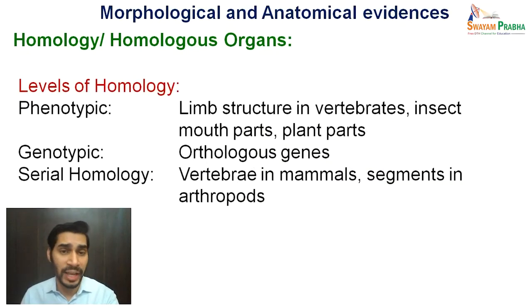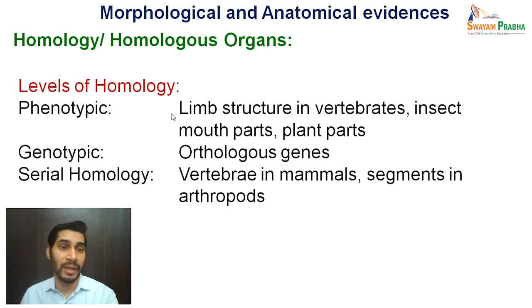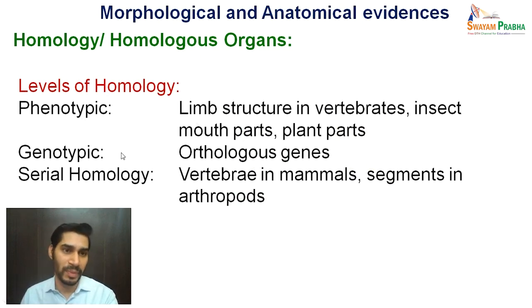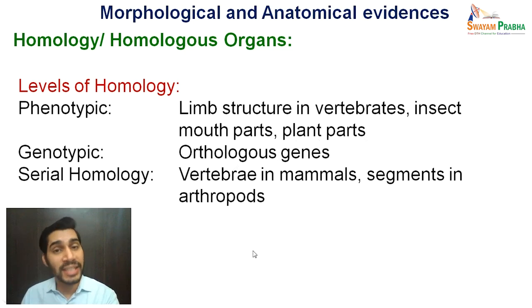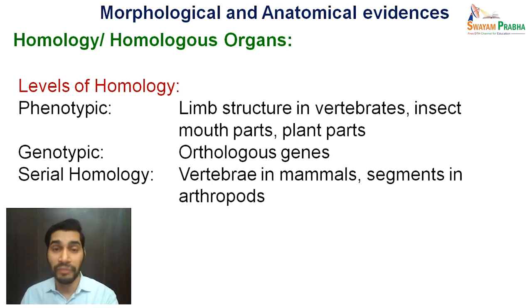The level of homology discussed through limb structures, insect mouthparts, or plant parts is more phenotypic in nature. This homology can also be genotypic in nature — for example at the gene level. Genes present in different organisms are called orthologous genes, which we will discuss shortly. Homology can also be serial homology, which is present in the same organism. For example, the vertebrae in mammals also have common origin and similar structure but are functionally different. Same is the case with segments in arthropods.